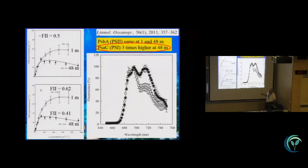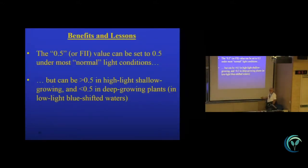If we would have done a rapid light curve using the 0.5 factor, then the difference between 1 and 48 meters would look like this. But if we do a rapid light curve with ETR versus irradiance, taking these other 0.5, in quotes, factors into account, which we call now F2 factors, then you can see that the curves or the differences between the high light and low light plant are quite different. The lesson we learned from this is, yes, 0.5 is okay to put in this electron transport formula, but it can be higher in shallow plants and lower in deep growing plants.